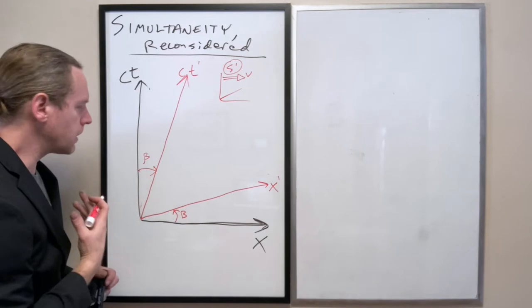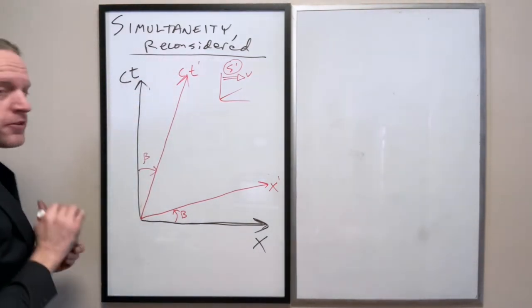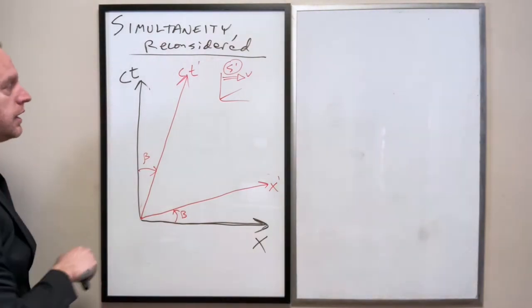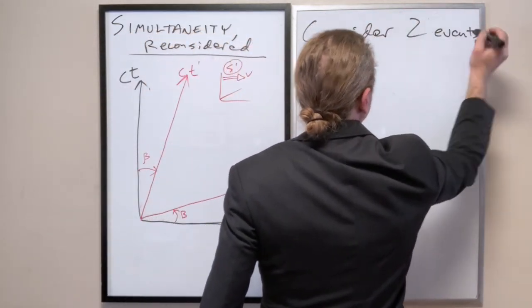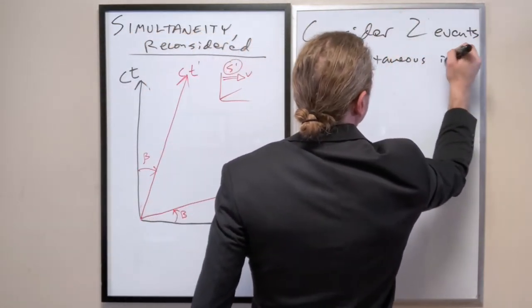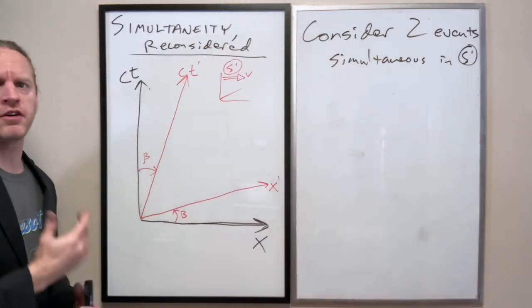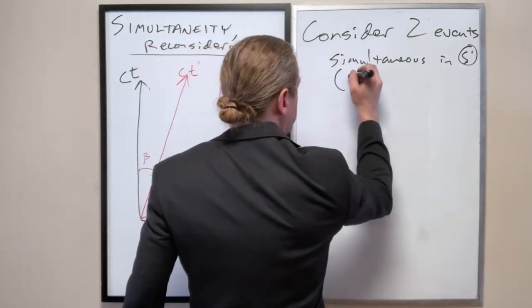So let's look at this diagram, a little simplified here, and let's specifically look at two events that are simultaneous in s prime. And specifically, maybe let's consider two events that are simultaneous at t equals zero, t prime equals zero.